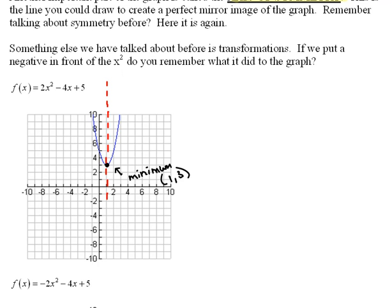So for instance, in this graph, if I were to draw a line right down through here, then this is what separates the graph out into the left side and the right side, and we have a perfect mirror image on either side. So this is called our axis of symmetry.